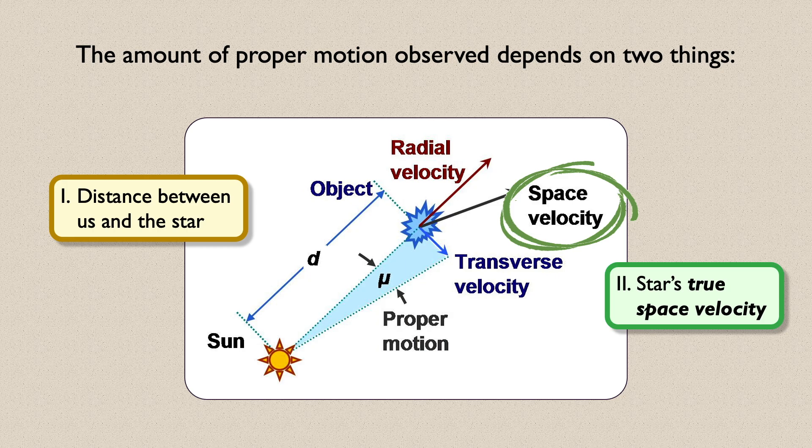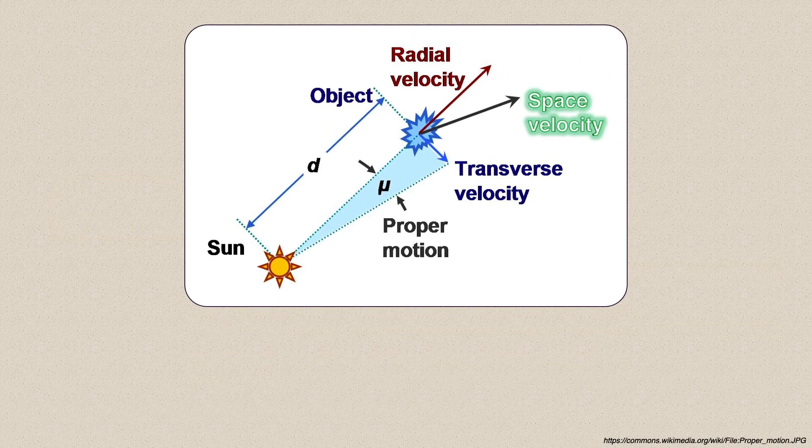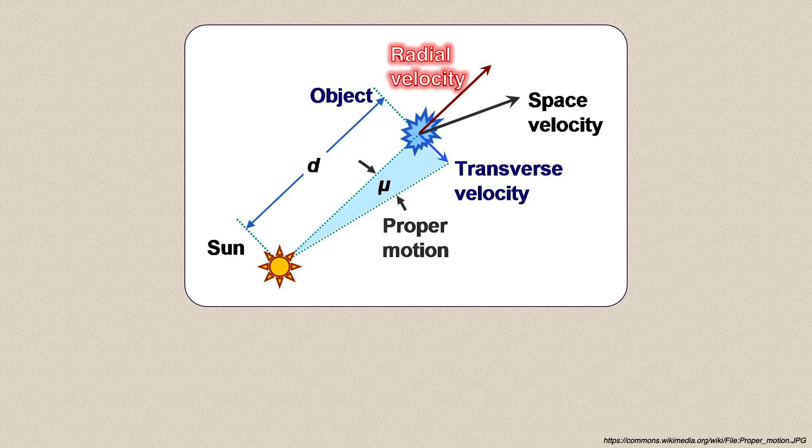The amount of proper motion observed depends on two things: the distance between us and the star, and the star's true space velocity.